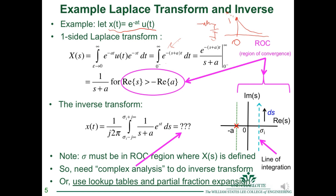Computing this Laplace transform, we plug in x(t) = e to the minus at times u(t). We can combine the two exponents to get the integral of e to the minus (s plus a) t dt. This integral evaluates to the numerator divided by (s plus a), and taking limits from zero to infinity, we split the exponent into its real and imaginary parts: e to the minus (sigma plus a) t times e to the minus j-Omega t.